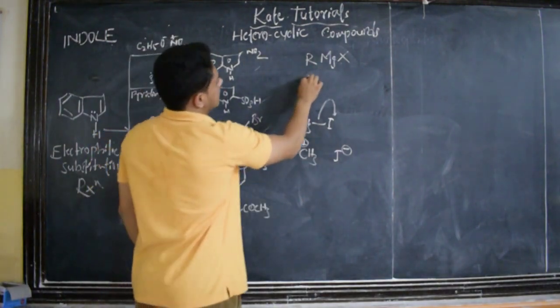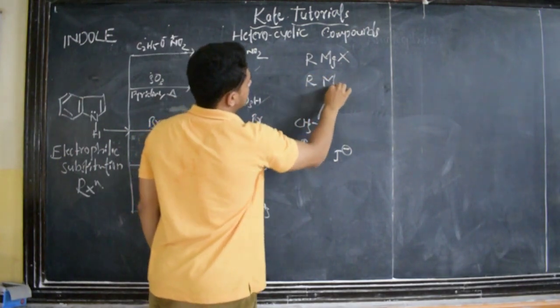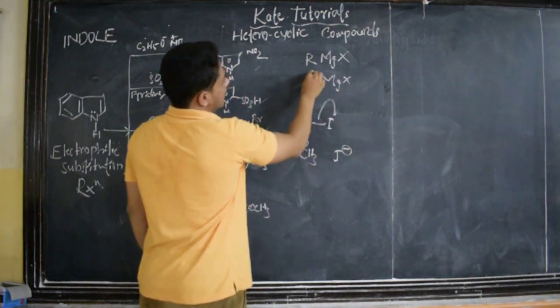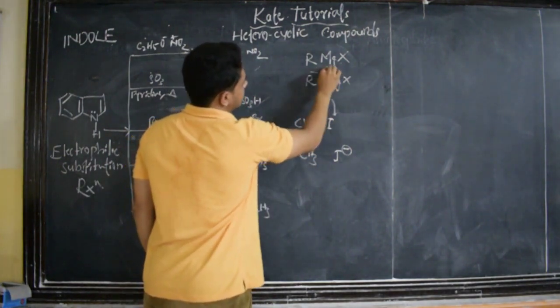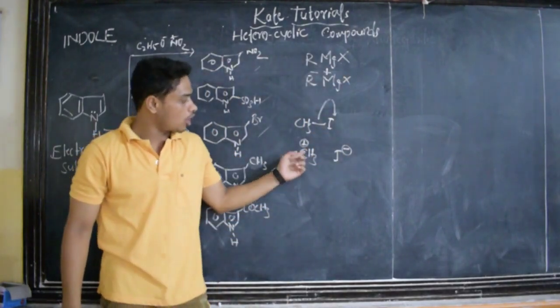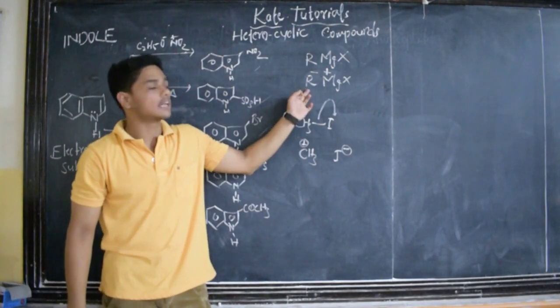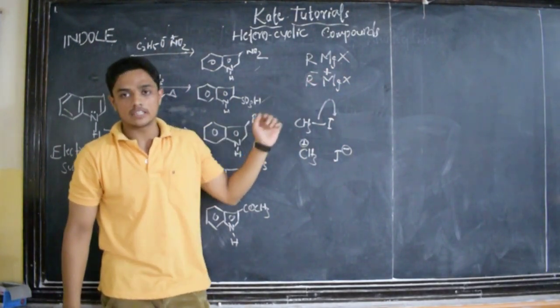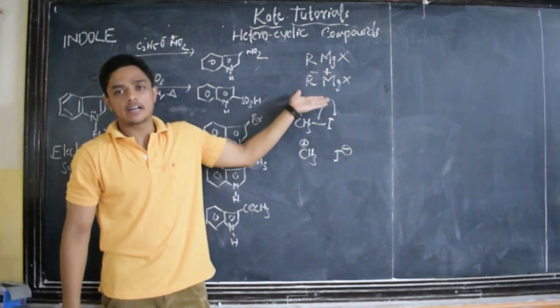R-Mg-X: the R gets minus and Mg gets positive. Here, the R, that is, the alkyl group got positive charge with methyl iodide. But here, the alkyl group got negative charge. It is the beauty of Grignard reagent or any organometallic compounds.